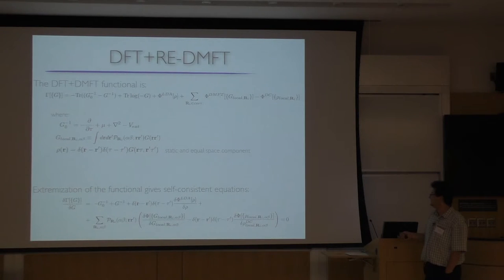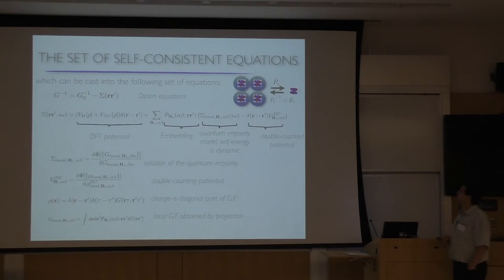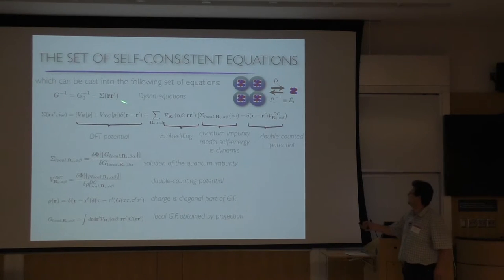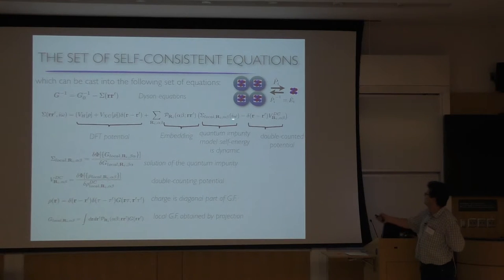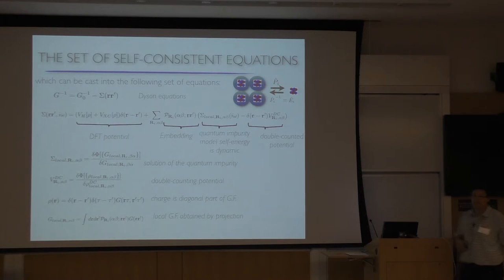There is a double-counting correction in the functional — the DC term fits in here. So we have G⁻¹ = G₀⁻¹ − Σ, with Σ_RR' in real space consisting of: the DFT part (completely local, δ(R−R')), the DMFT part (less local, determined by the projector), and the double-counting term — the DMFT approximation for the LDA functional, or LDA approximation for the DMFT functional.